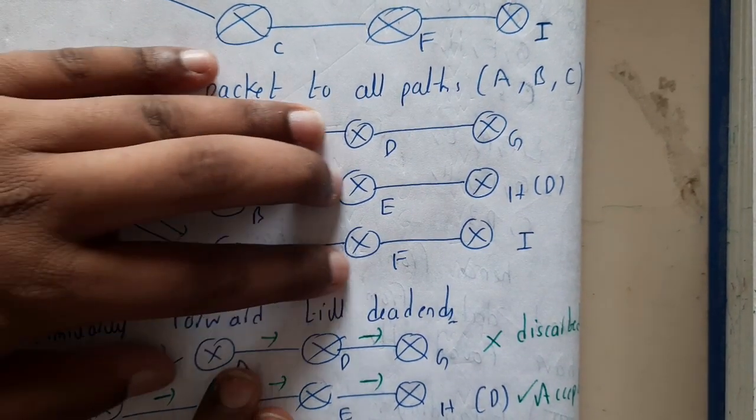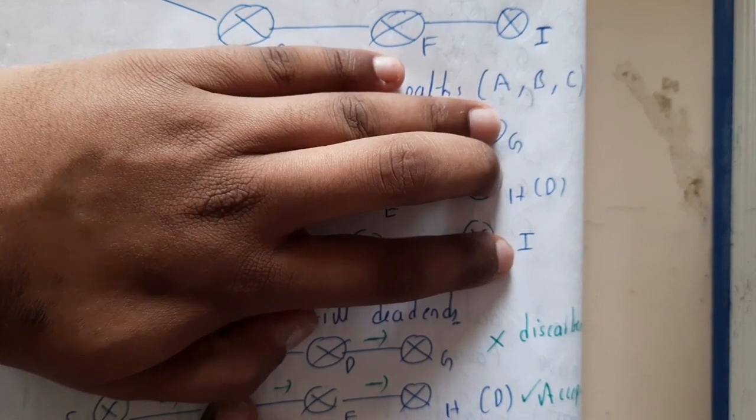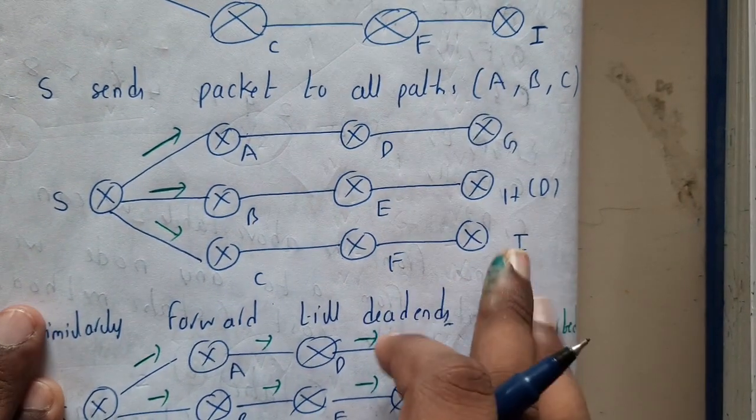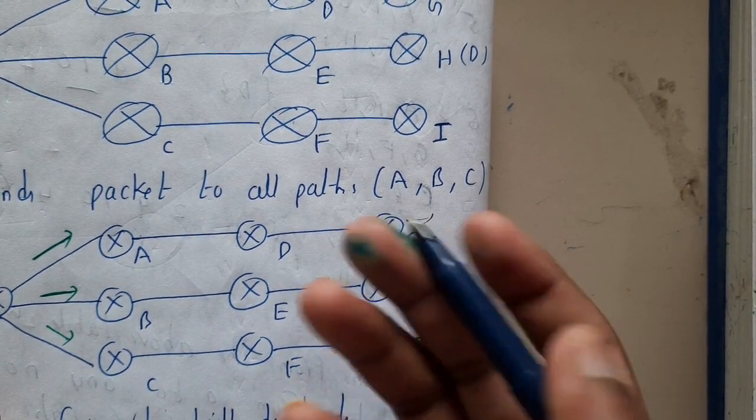Again, A, B, C will be duplicating them and sending to these three nodes. It will be flowing in that way. Our destination is H. Whenever these nodes open, they'll be thinking they want to send forward, but there is no forward because that packet does not belong to them.